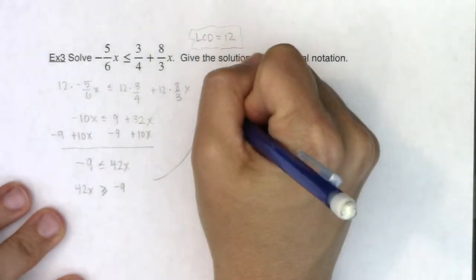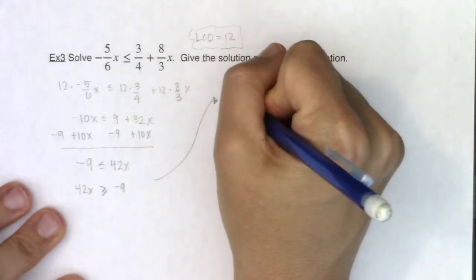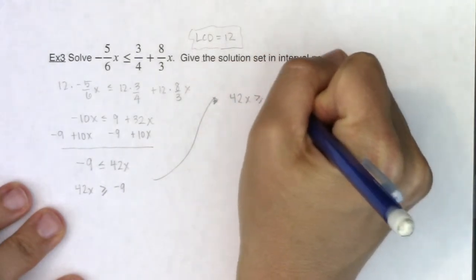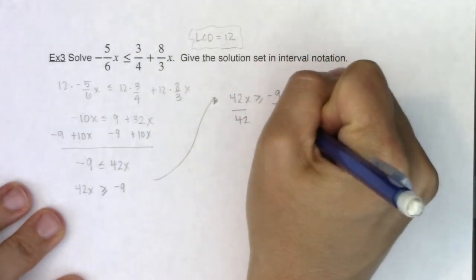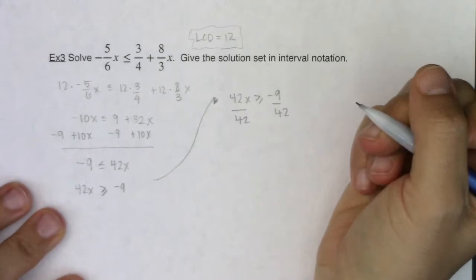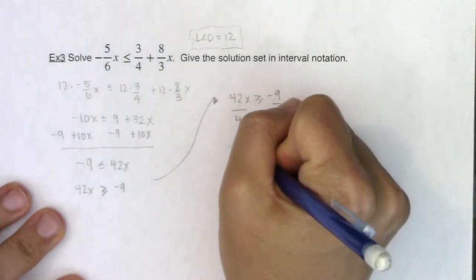Okay, so let me move this over here. So we're taking a look at it. So now I have 42x has to be greater than or equal to negative 9. I'm going to divide by 42. Because I'm dividing by a positive number, I don't need to change the direction of my inequality.